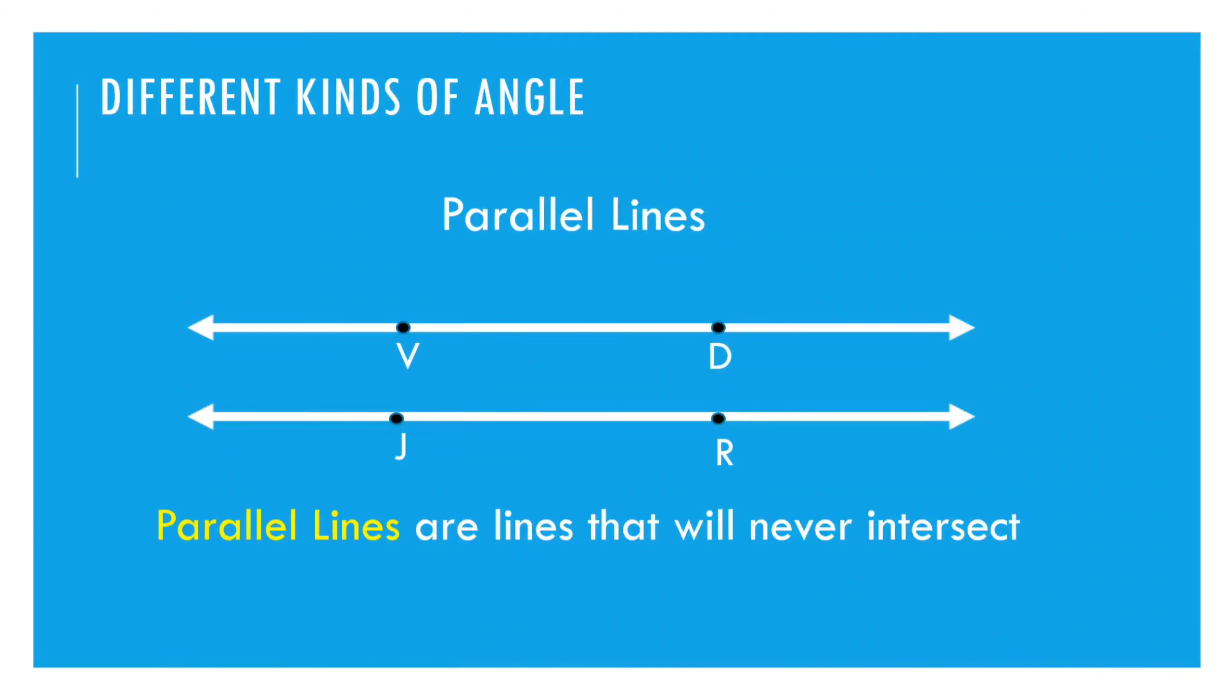Let us try to look at these lines first. Let us consider na mayroon tayong dalawang line at lagyan natin ng points. At pangalanan natin yan ng point V and point D. Therefore, we have line VD. We have point, two points again. Then we have J and R. We have line JR. Consider na i-extend natin ang dalawang line na yan. We extend yung dalawang line at anong napansin nyo? Hindi siya nag-i-intersect. Kahit i-extend pa natin yan, hindi siya mag-i-intersect. Kasi ang dalawang line na yan ay tinatawag na parallel lines. Parallel lines are lines that will never intersect.